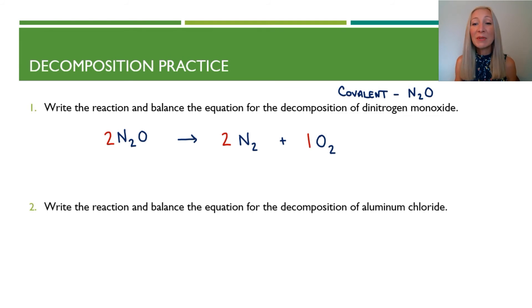Okay, so we have the decomposition of aluminum chloride. Aluminum chloride is commonly found in antiperspirants. This is an ionic compound. We have aluminum and chloride, a metal and a nonmetal, a cation and an anion. And we write the formula by balancing the charges.